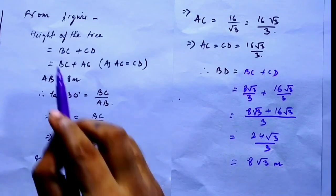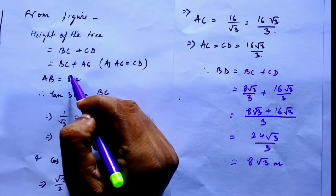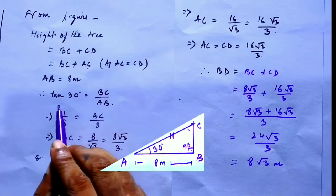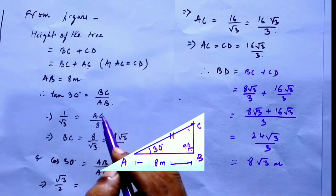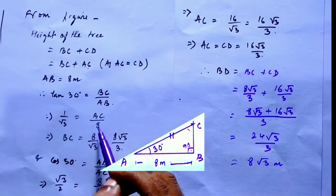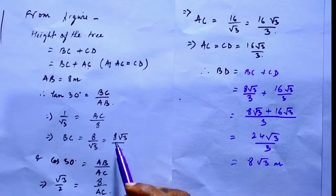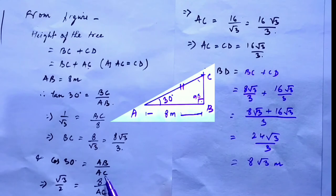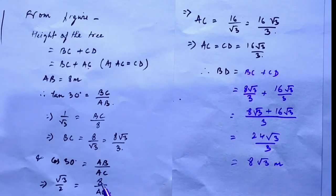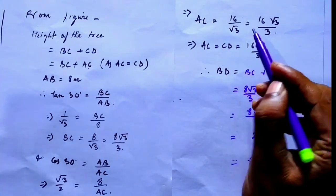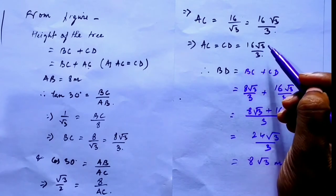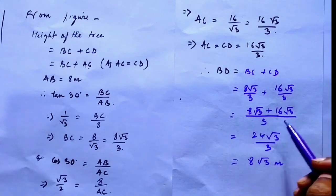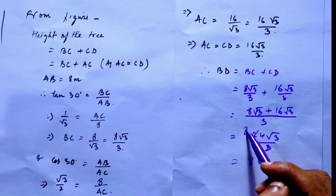In general form: from the figure, height of the tree is BC + CD. AB is given as 8 meters. tan 30° = BC/AB = BC/8, so BC = 8/√3 = 8√3/3. Again, cos 30° = AB/AC, so √3/2 = 8/AC, giving AC = 16√3/3. So BD = BC + CD = 8√3/3 + 16√3/3 = 24√3/3 = 8√3 meters is the answer.